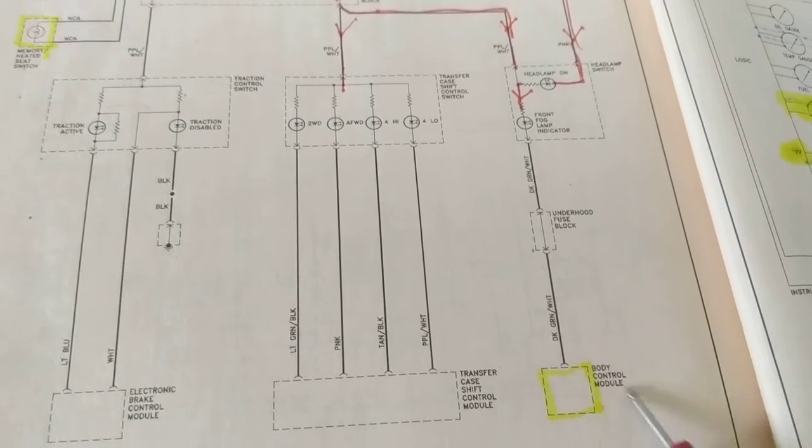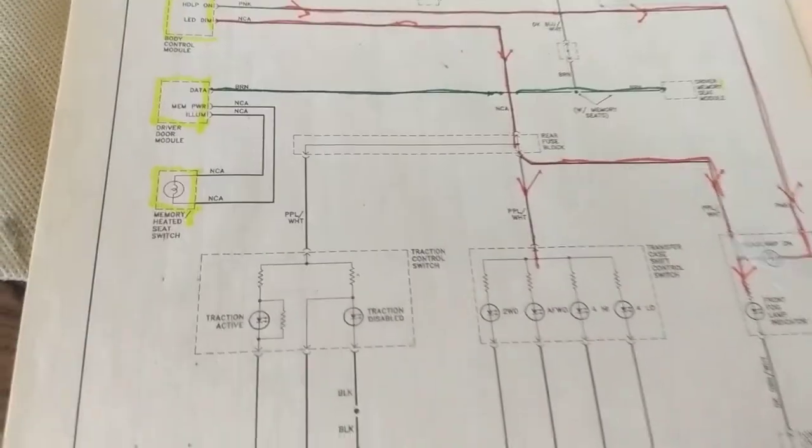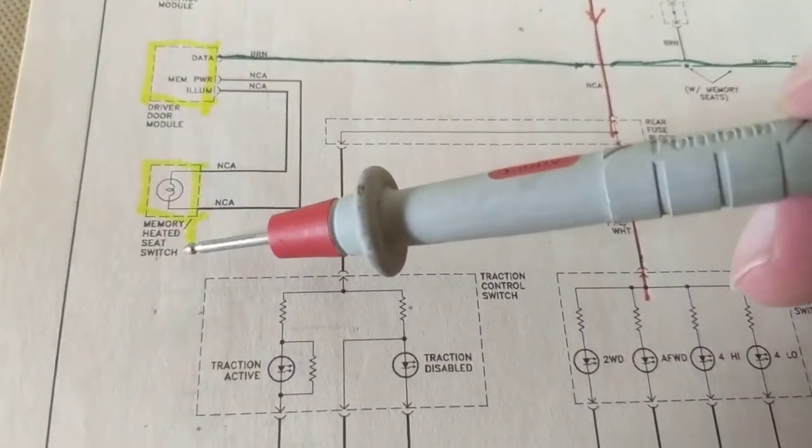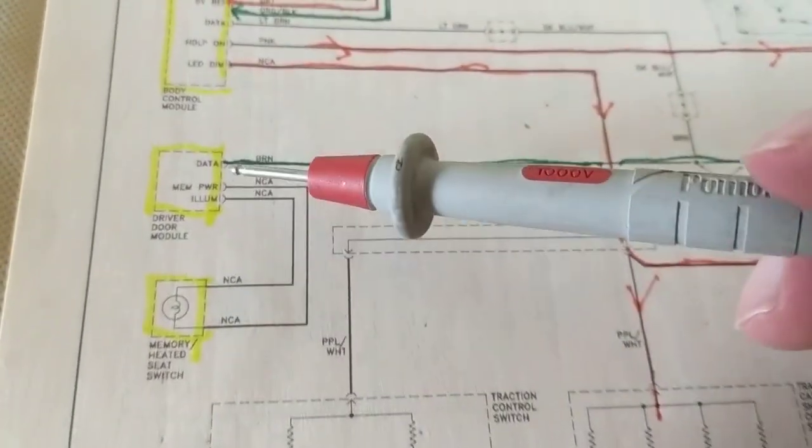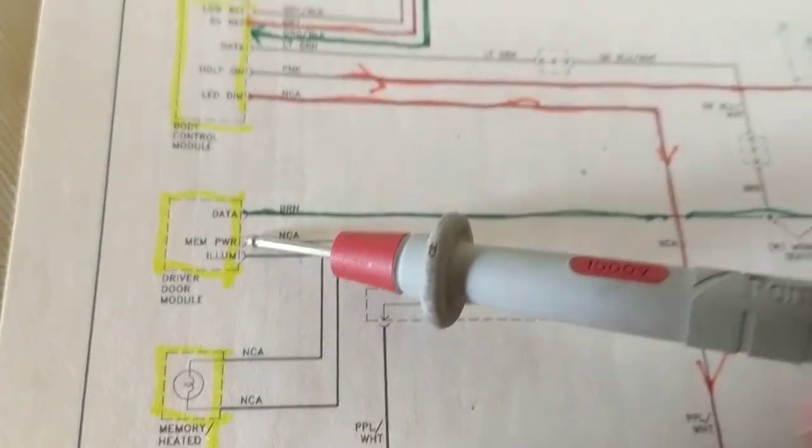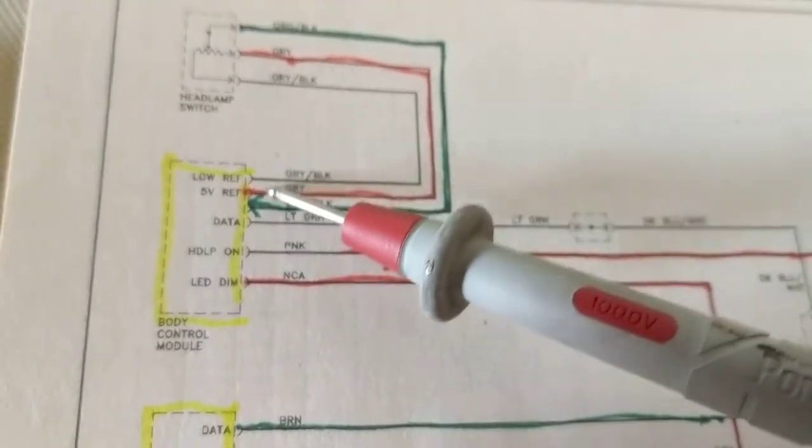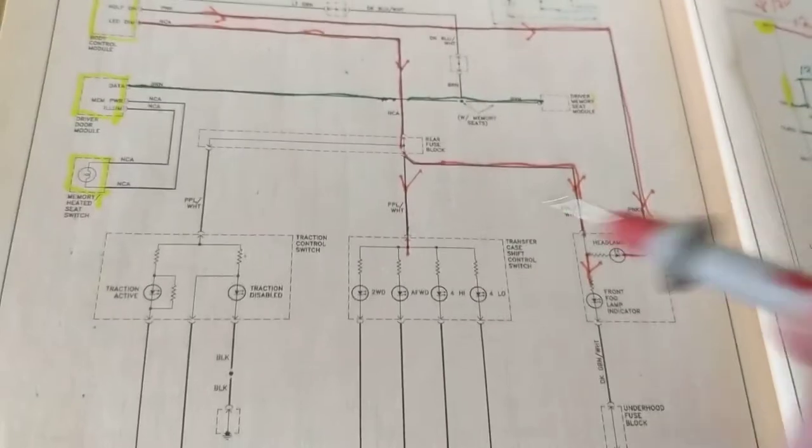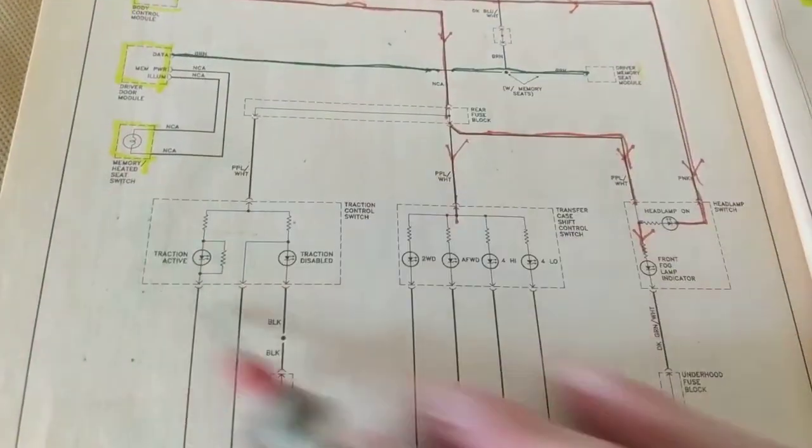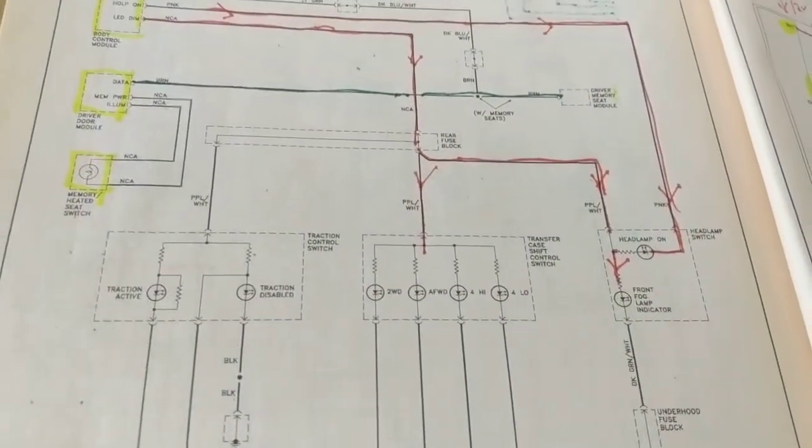Outlined over here is the body control module I outlined. That's a main component. Memory, heated seat position switch, main component. Driver door module, main component. And over here, of course, body control module, always a main component, a computer. That is the ones that you concentrate on.